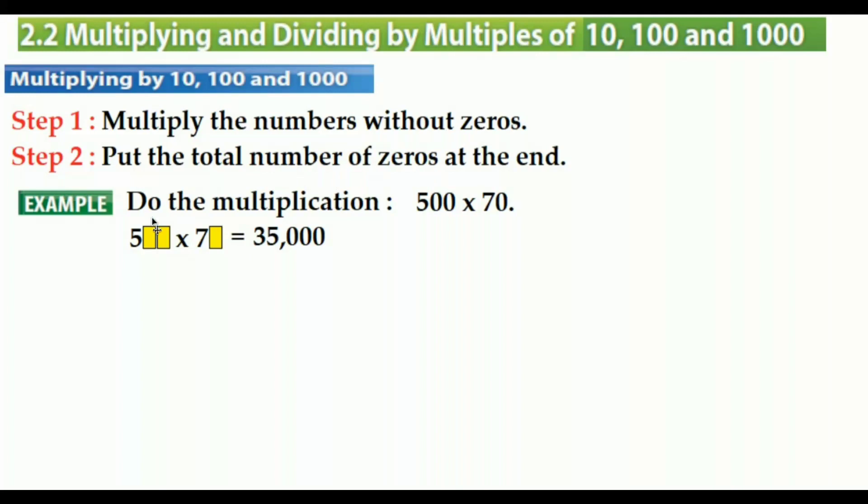We have to bring the total number of zeros at the end. How many zeros do we have? Two zeros here, one zero here. We are going to bring them to the end, which makes 35,000.